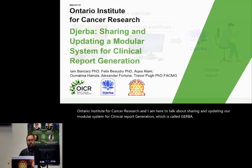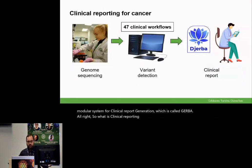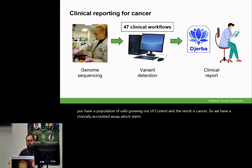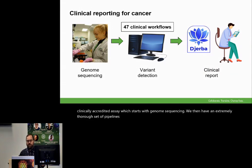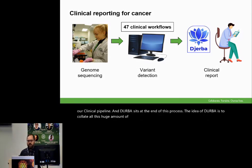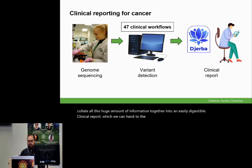So what is clinical reporting? Cancer is a disease of the genome. Mutations occur, you have a population of cells growing out of control, and the result is cancer. So we have a clinically accredited assay which starts with genome sequencing. We then have an extremely thorough set of pipelines for analysis and variant detection, with a total of 47 workflows in our clinical pipeline. And GERBA sits at the end of this process. The idea of GERBA is to collate all this huge amount of information together into an easily digestible clinical report, which we can hand to the physician for an individual patient.